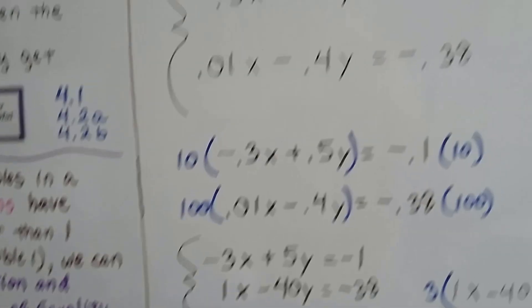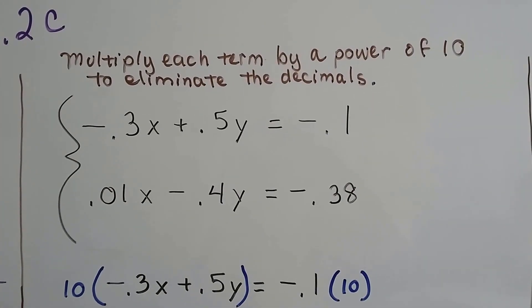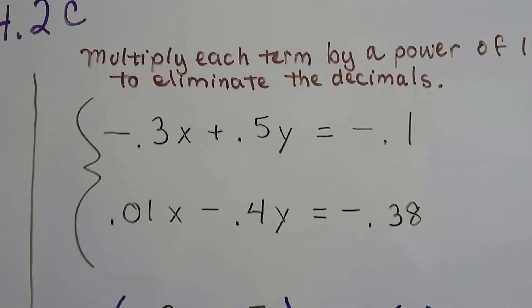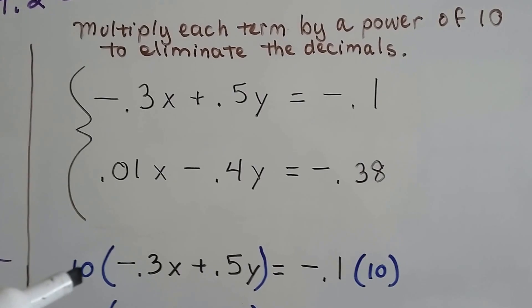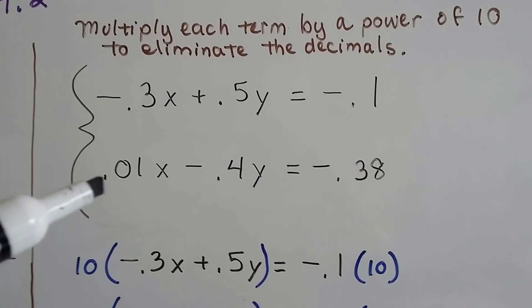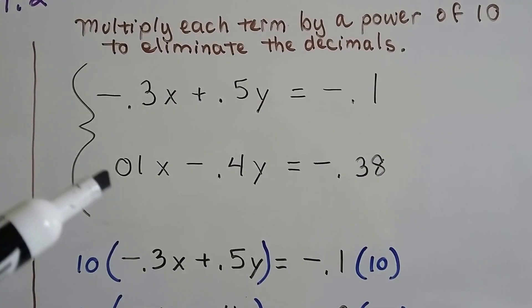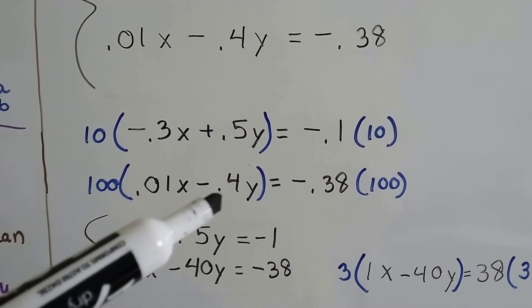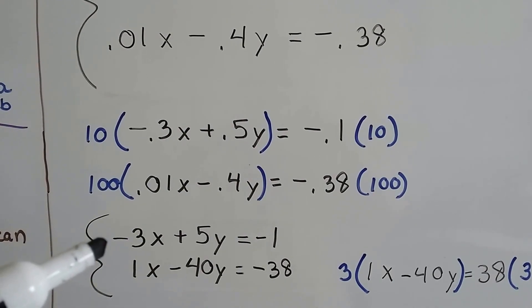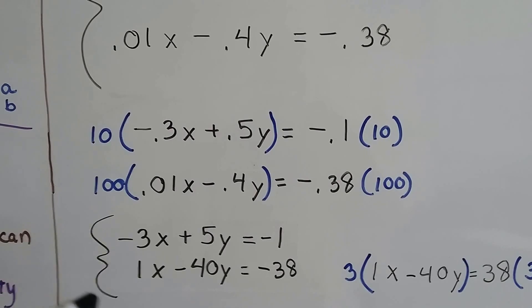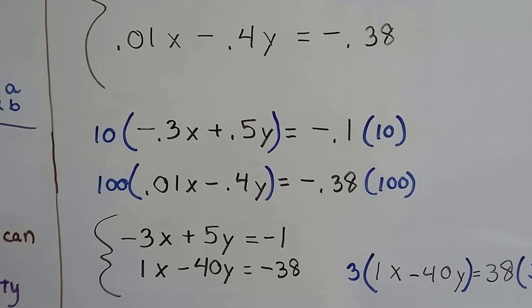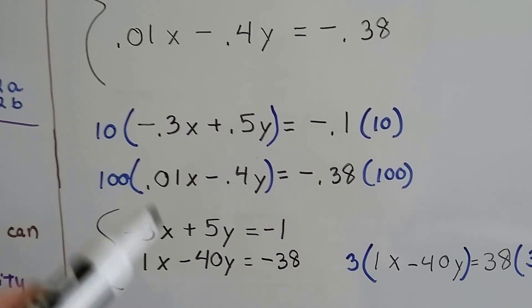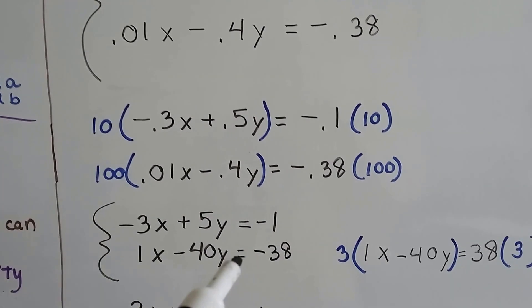Let's see what happens with the decimals. We can multiply each term by a power of 10 to eliminate the decimals. We see in the first equation, all we have are tenths, so we can multiply this first equation by 10. This one has hundredths, so we should multiply this one by 100. That's going to push this 0.4 to be a 40. And we get -3x + 5y = -1, and 1x minus 40 equals -38.